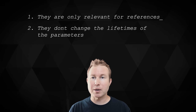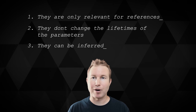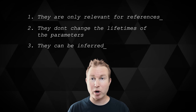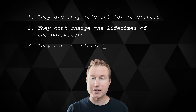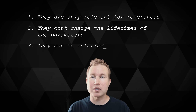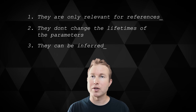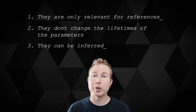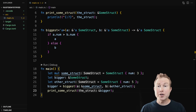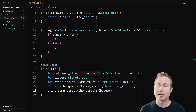A few things about lifetimes. First, they're only relevant for references, making sure we never wind up where a reference points to freed memory. Second, they don't change the lifetime of the parameters — they just act as a guide for the compiler to know what you're intending to do with those parameters. Third, sometimes lifetimes can be inferred. For example, if you write a function that takes one reference as a parameter and returns a reference of the same type, the lifetime is actually inferred — the compiler knows you're returning that parameter. But functions aren't the only place we can use lifetimes — we can make a struct with read-only reference fields and lifetimes can come into play there as well.